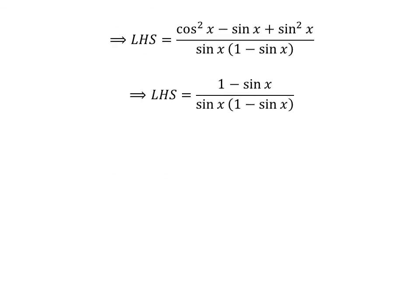We know that the square of sine of x plus the square of cosine of x equals 1. So the left hand side becomes 1 minus sine of x, upon sine of x times 1 minus sine of x.